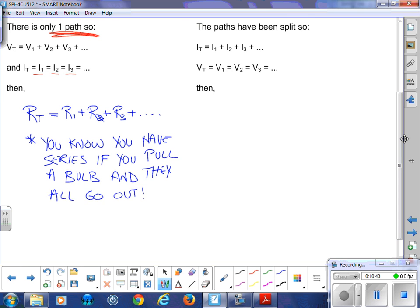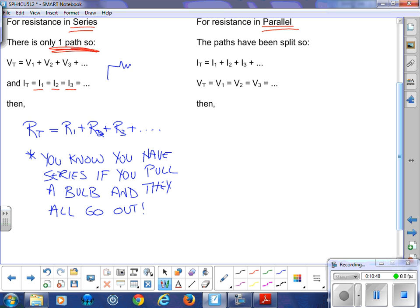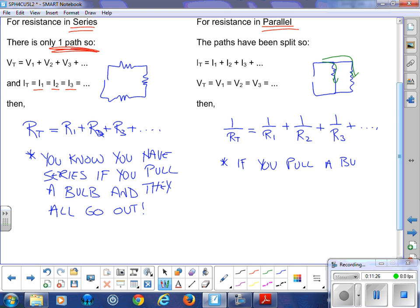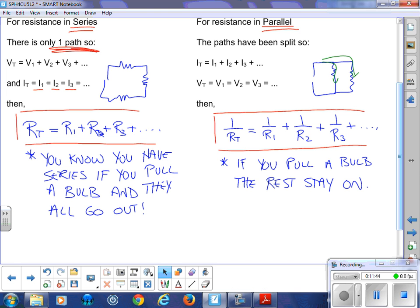Now in parallel, parallel means that the pathways split. So for series there was only one pathway, all the current had to go through the one pathway back to the battery. In parallel, an example will look like this: you had two choices, choice one, choice two. In that case, we find that your total resistance is governed by this relationship: 1 over R total equals 1 over R1 plus 1 over R2 plus 1 over R3. I'll get into the math when we do some examples later on, but we call that the sum of the inverses. Here, if you pull a bulb, the rest stay on. Much better lights to buy because if you have one bulb blow, the rest of them stay on. So there are the two formulas, you might as well add them to your formula sheet now.